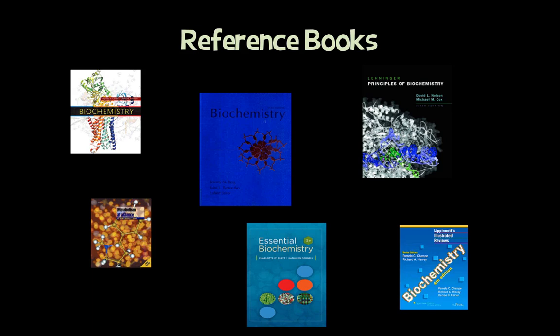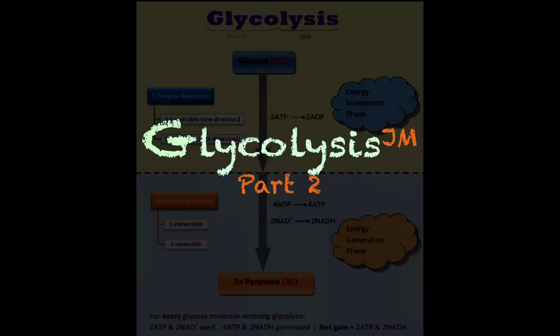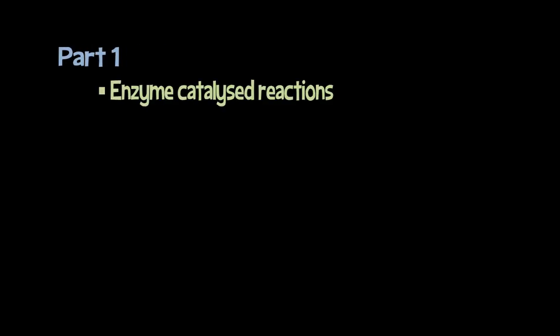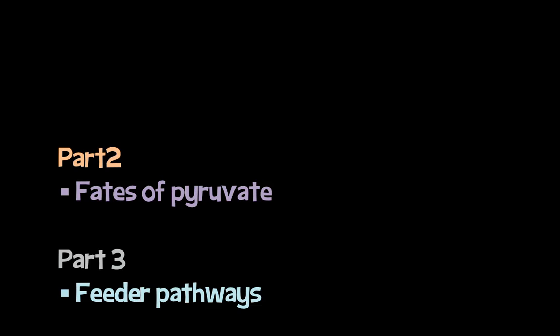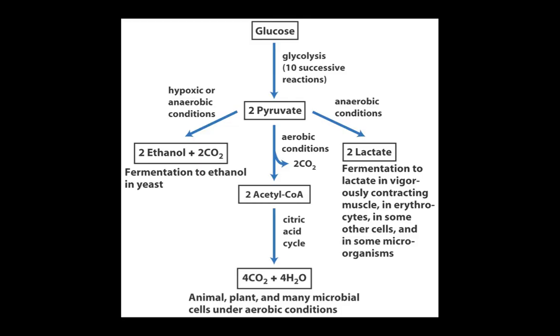We're doing glycolysis part two. If you haven't looked at glycolysis part one, go to the Biochem GM YouTube channel and get that video — it's very important that you do this in a certain order. In part one, we looked at the enzyme-catalyzed reactions, all ten reactions going from glucose to two molecules of pyruvate. Today we're going to look at part two: the fates of pyruvate.